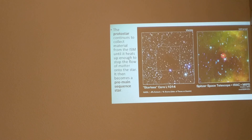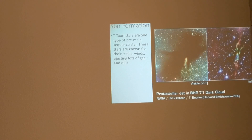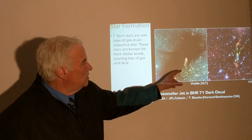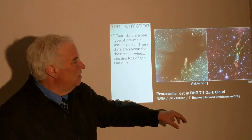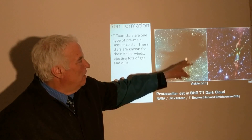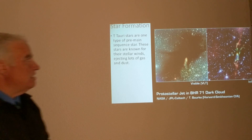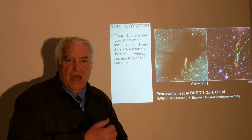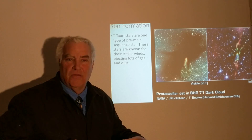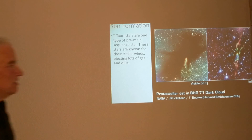Once the protostar continues to collect material from the interstellar medium and heats up enough to stop the flow of matter onto it, we call it a pre-main sequence star. In infrared, we can see lots of stars being formed and bipolar jets of material coming out of the poles of the forming protoplanetary disk in the late stages of star formation.